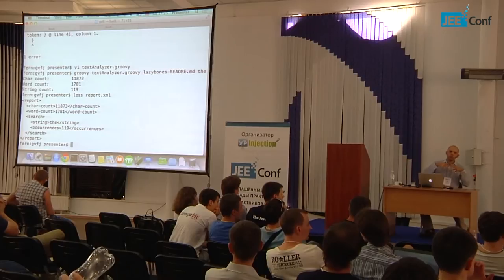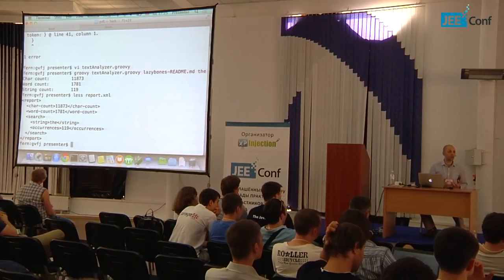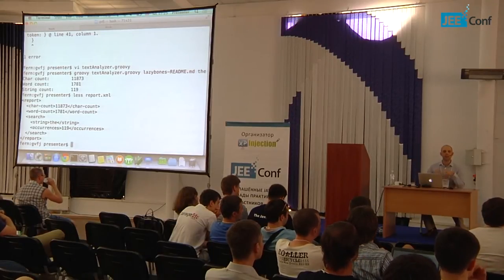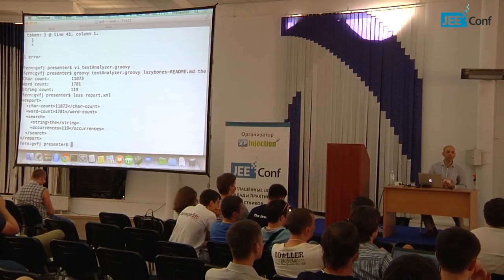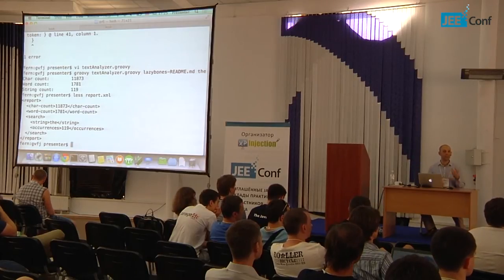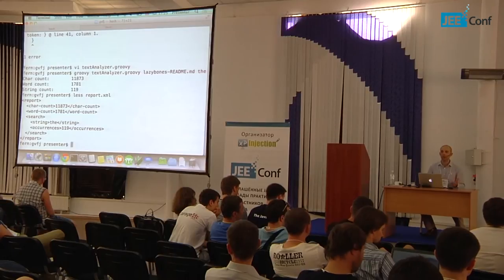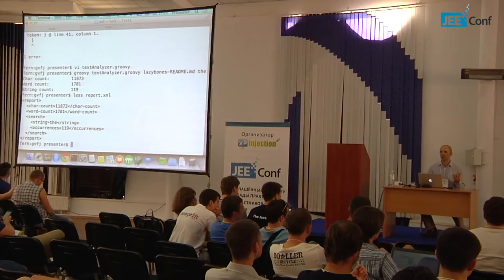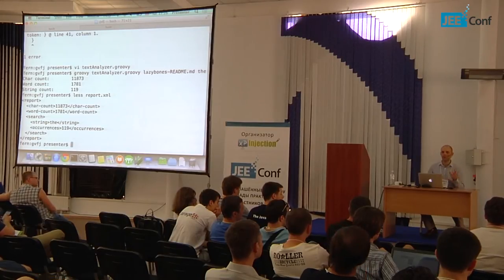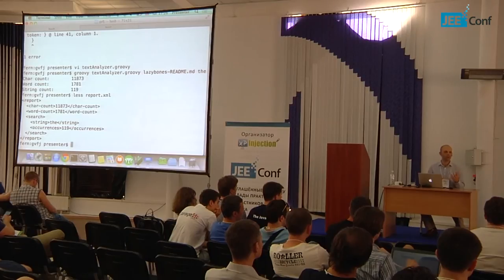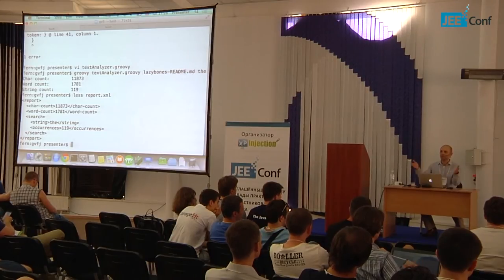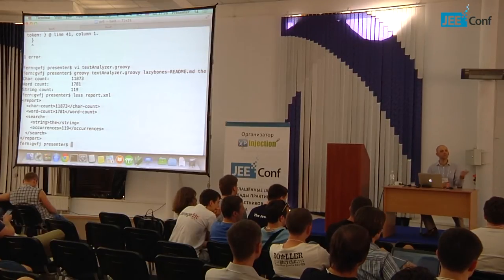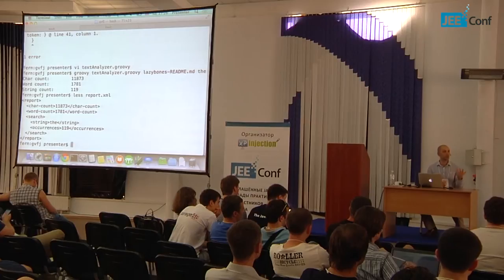I want a root element called 'report', then char-count, word-count, and optionally a nested 'search' element with the string being searched on and the occurrences. There's no XML — no angle brackets or close tags — it's just Groovy code. All these nested curly braces are closures. This is something you can't do with Java 8 Lambda expressions. After fixing a small syntax error, I get my normal report output plus a report.xml with the generated XML. You can see the element names matching the method names in the MarkupBuilder. It also makes it easy to parse XML, parse JSON, and generate JSON.